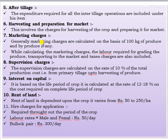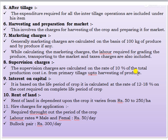Seventh is marketing charges, generally calculated on the basis of 100 kg of produce and by-produce if any. While calculating marketing charges, labor required for grading the produce, transporting to market, and tax charges are also included. Eighth is supervision charges, calculated at the rate of 10 percent of the total production cost, that is from primary tillage up to harvesting of the produce.